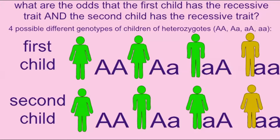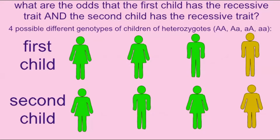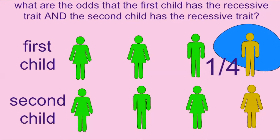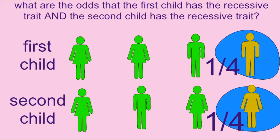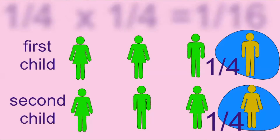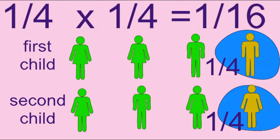If one asks what are the odds that both children possess the recessive phenotype, one would also use the law of the product. These are independent events — multiply the probability that the first child has the recessive trait, which is one in four, times the probability that the second child has the recessive trait, which is one in four. Thus there is a one-sixteenth chance that these parents will have two children which both possess the recessive trait.